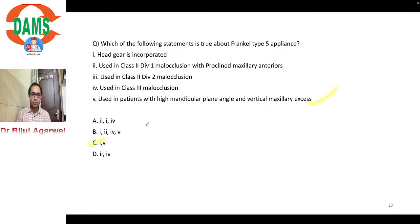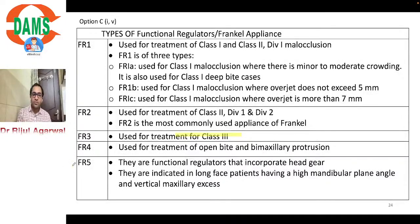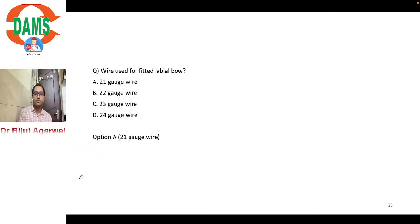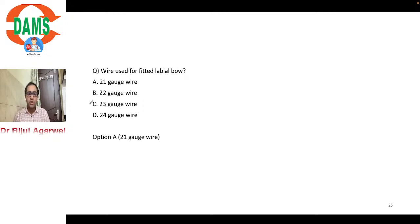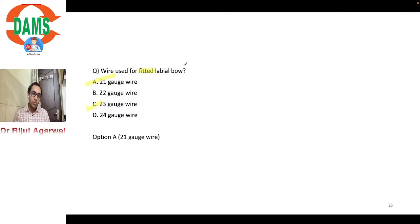Question: wire used for fitted labial bow — the correct answer is 21-gauge wire. If the question asks about an active labial bow, the answer is 23-gauge. If it asks about a passive labial bow, it is again 21-gauge. Pay attention to whether the question specifies fitted, active, or passive.